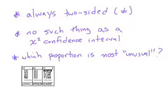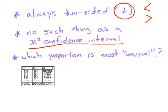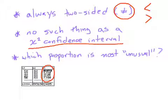Two notes about chi-squared: first, it's always a two-sided test — there's no such thing as a one-sided chi-squared test, no less than or greater than, it's always a not-equal-to idea. Second, there's no such thing as a chi-squared confidence interval; there are only hypothesis tests. Also, if a part B asks which proportion is most unusual, look at the contributions — whichever has the biggest contribution is the most unusual. In this case it would be lime with 420.